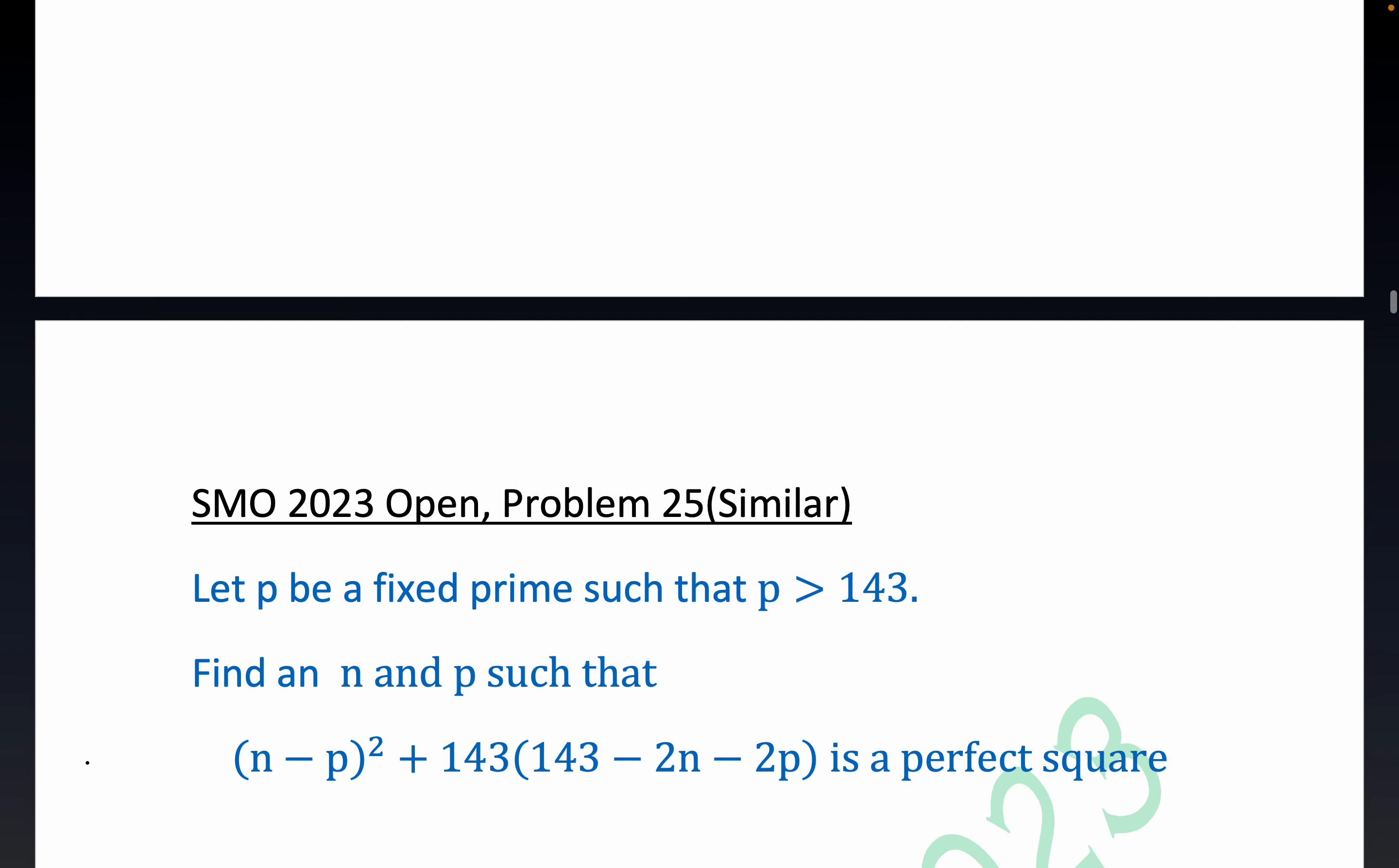Good morning, everybody. I'm working a slightly modified version of a recent SMO open problem where the question in that particular contest was to count the number of n such that this condition could occur where it's a perfect square. I want to find a concrete n and p that satisfies this, which varies a little bit from the original problem, which was to count the number of n that would happen for a fixed prime.